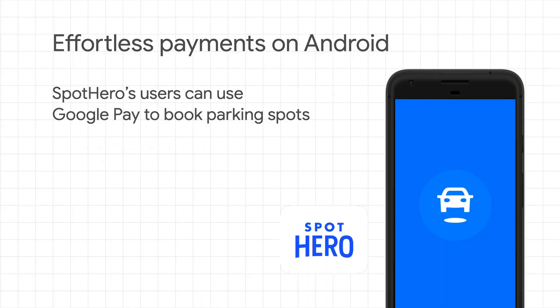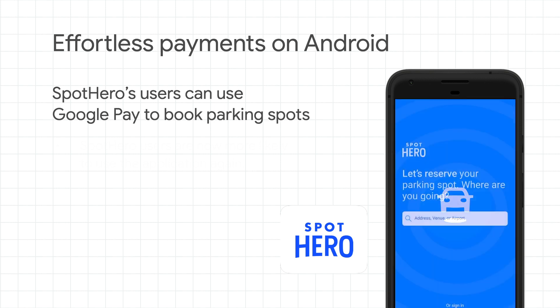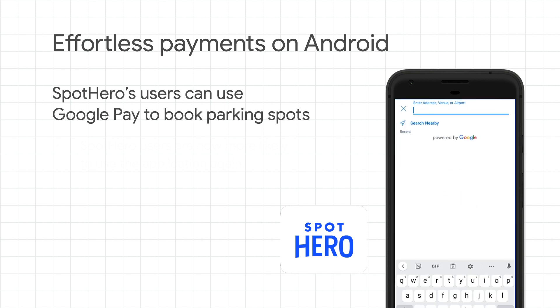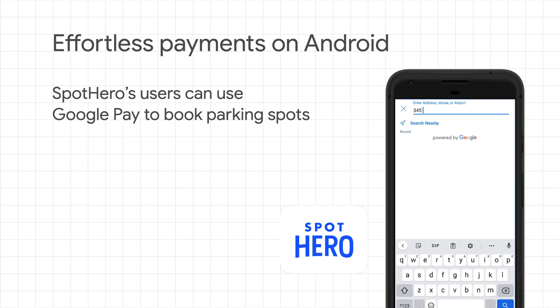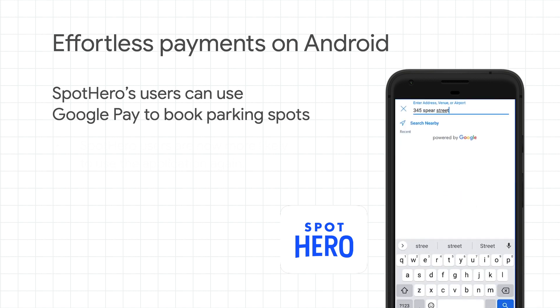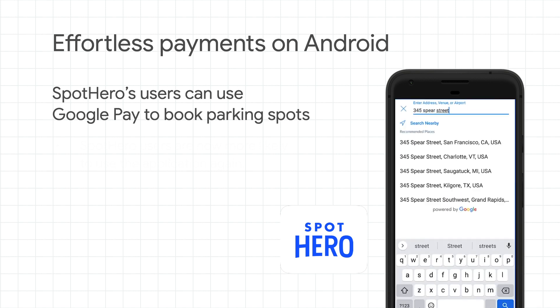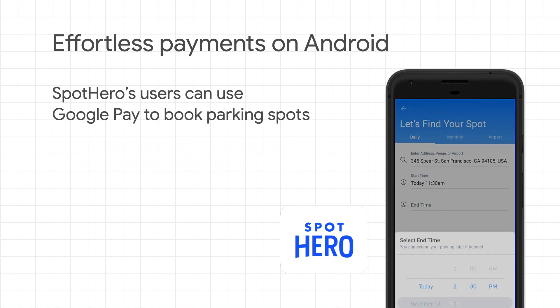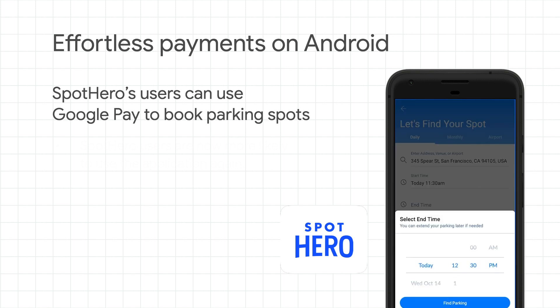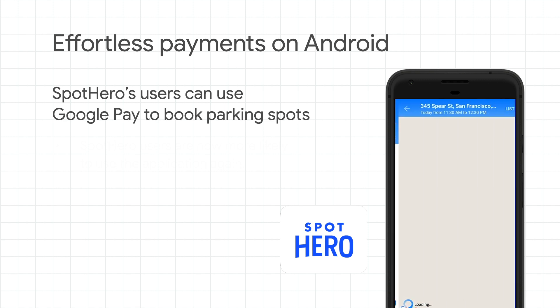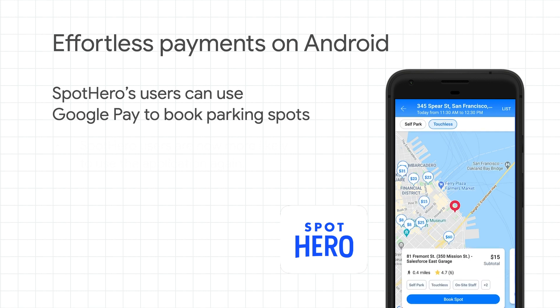Let's look at Spot Hero as an example. Spot Hero is a digital parking leader and the largest seller of parking in North America. With the Spot Hero app, you can find and book a parking spot at discounted prices. After you download the Spot Hero app from the Google Play Store, you can easily enter your destination, view nearby spots, and reserve a spot.